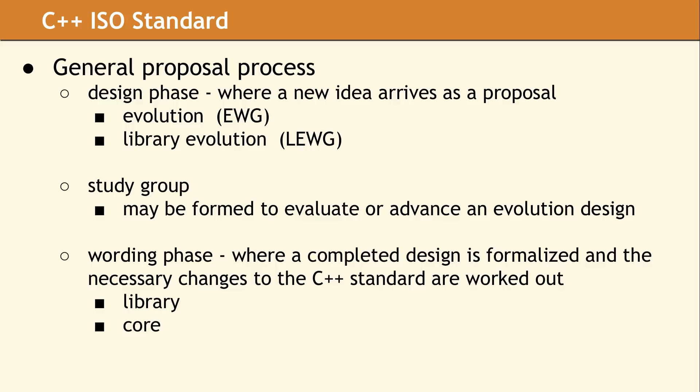Typically, a study group is assembled when there are multiple proposals which conflict, or one proposal exists which is inadequate or incomplete. The goal of an SG is to create a proposal suitable for consideration by the whole WG. The working group will then decide whether to accept the revised proposal or send it back to the study group.